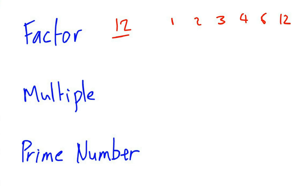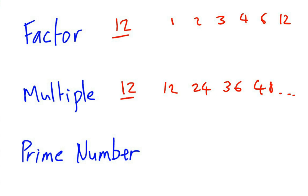A multiple — let's use the example of 12 again. A multiple of 12 is any number in the 12 times table. So that could be 12, 24, 36, 48 and so on. All those numbers are in the 12 times table. And you'll notice that 12 is both a factor and a multiple of 12 as well.